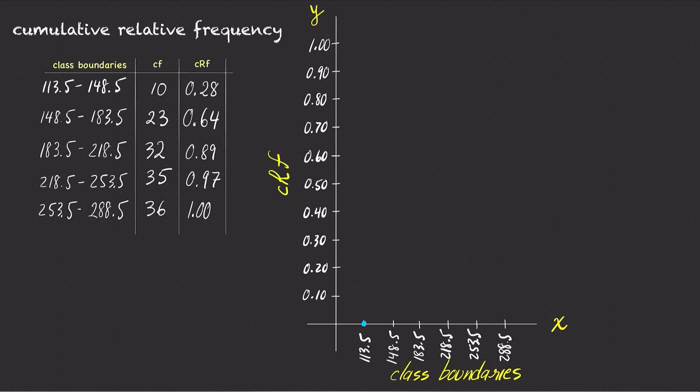For the first class itself, going from 113.5 and up to 148.5, the cumulative relative frequency is 0.28. So, above the first class upper boundary at 148.5, mark a dot with a height of 0.28 to indicate that the CRF is 0.28 for the first class.